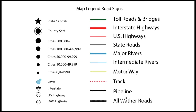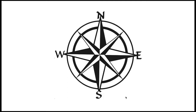The legend, also known as the key, explains what the symbols on your map represent. The compass indicates the cardinal directions of north, south, east, and west.